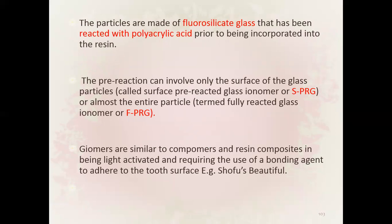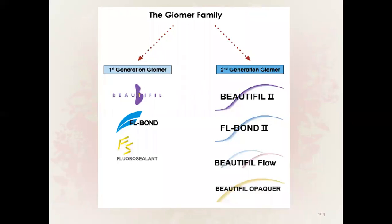An example is Shofu's Beautifil. We have first generation giomer — example: Beautifil, FL Bond, and Fluorosilicate — and second generation giomer — example: Beautifil FL Bond 2, Beautifil Flow, and Beautifil Opaquer.